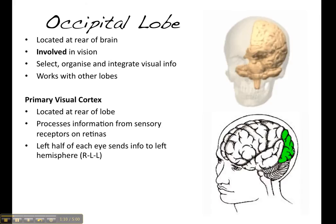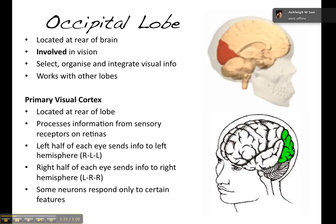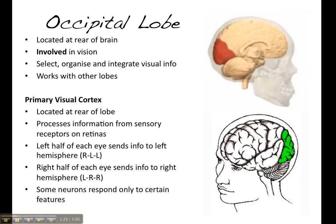And some neurons, we also contain the primary visual cortex feature detector cells, which respond only to certain features of a stimuli. So, for example, if you're looking at a moving dot, only certain neurons will fire and get very excited when they see a moving dot, or a line, a moving line moving horizontally.